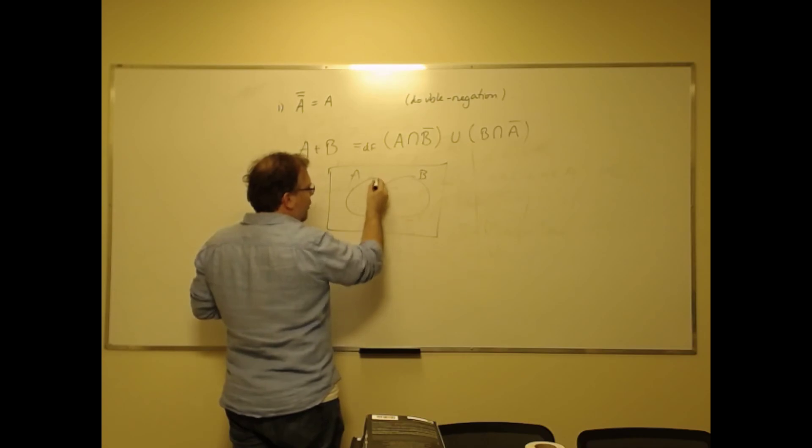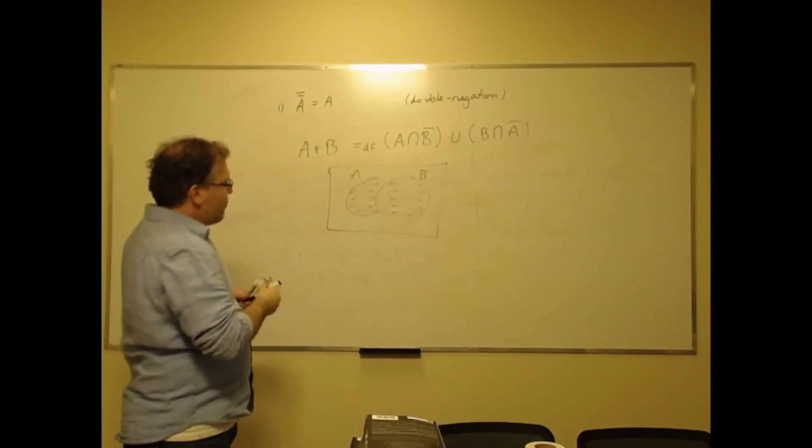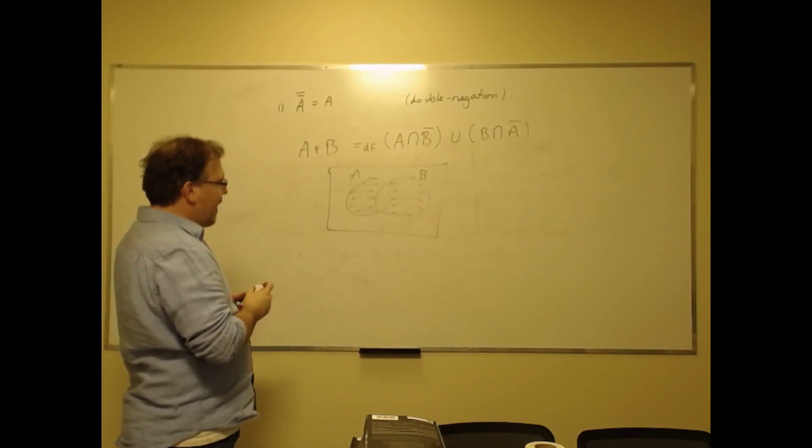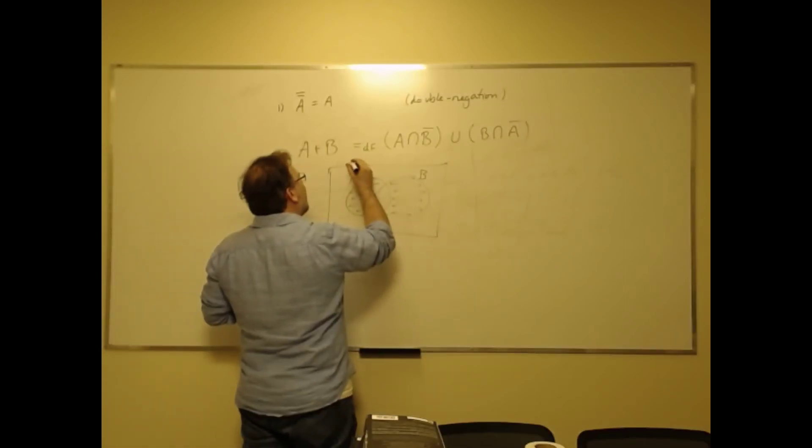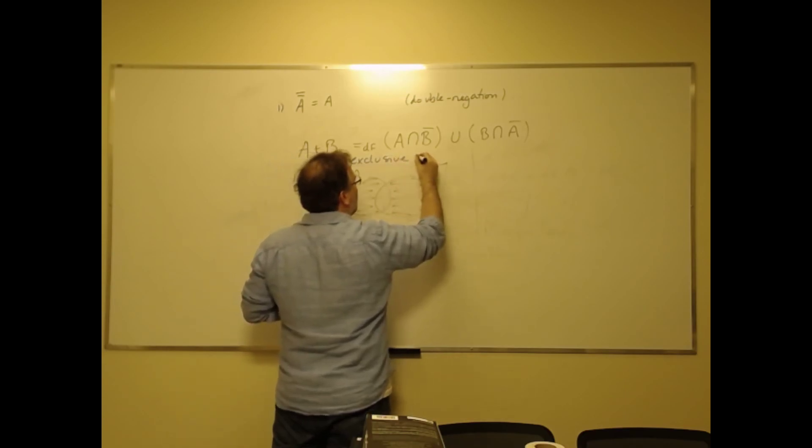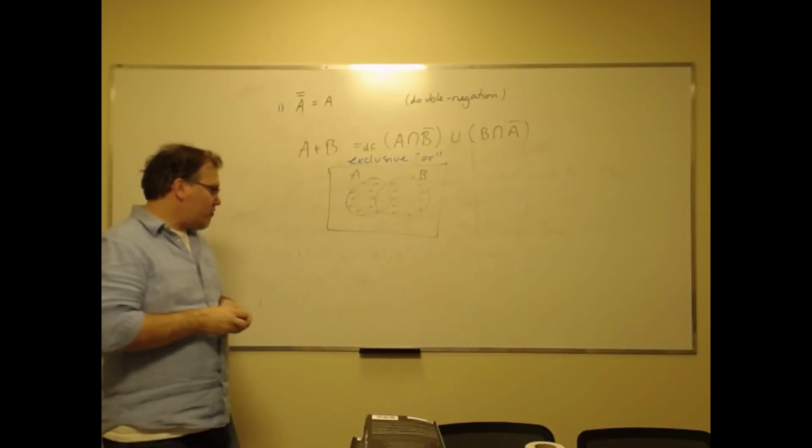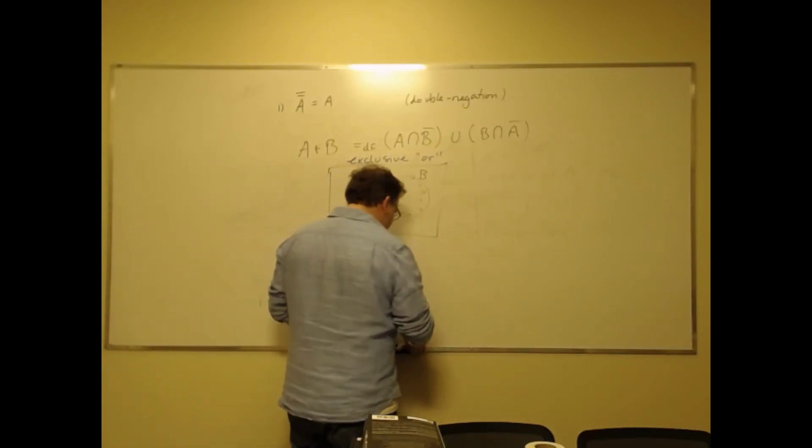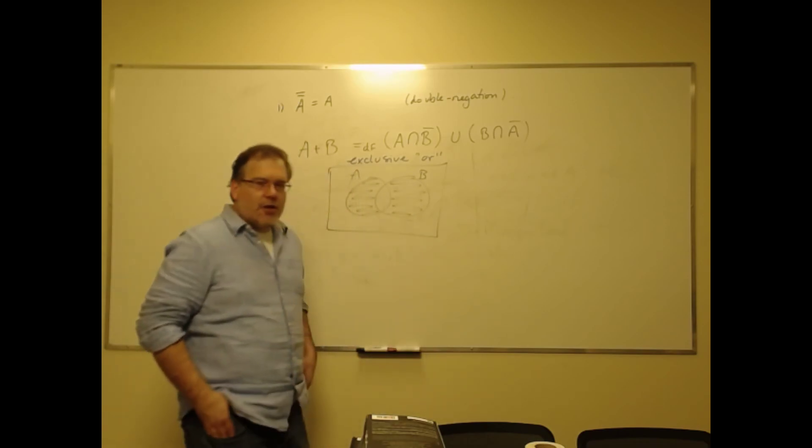So A intersection not B is this, and B intersection not A is this. So as you see, it includes everything in A and B except what's in both, so it's a bit like the exclusive or in propositional logic.